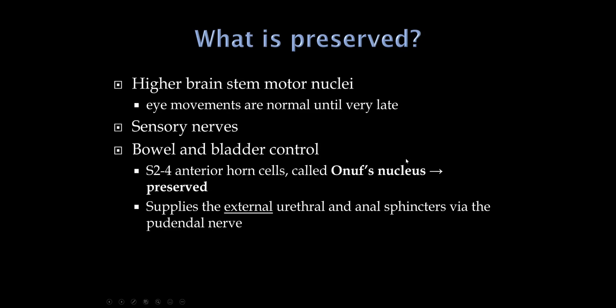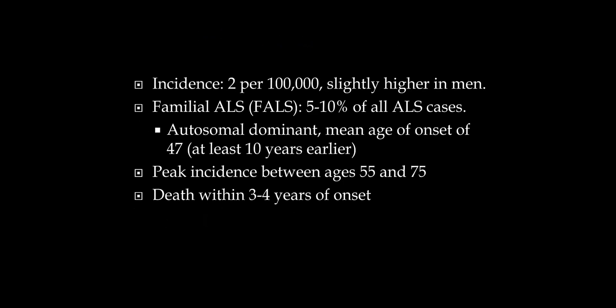What is preserved in ALS: the higher brainstem motor nuclei - eye movements are normal until very late. Sensory nerves are relatively preserved, so the sensory exam is pretty unremarkable. Even though we have anterior horn cells in the sacral cord called Onuf's nucleus, bowel and bladder function tend to be preserved in ALS.